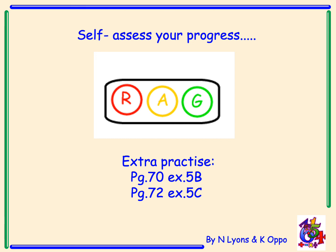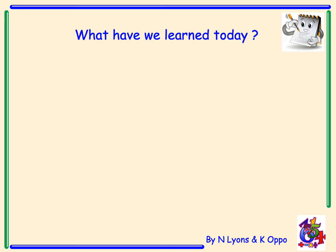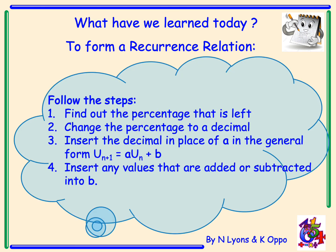Please self-assess your progress. If you would like extra practice, turn to page 70 or page 72 of your textbook. So, what have we learned today? To form a recurrence relation, follow these key steps. Step 1: find out the percentage that is left. Step 2: change the percentage to a decimal. Step 3: insert the decimal in place of a in the general form u_{n+1} equals a·u_n plus b. Step 4: insert any values that are added or subtracted into b.